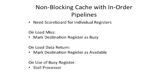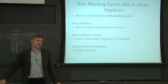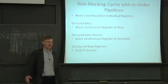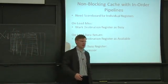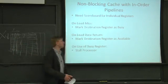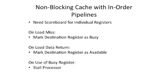For in-order machines, you can add a scoreboard bit for each individual register. When I say scoreboard here, you're not tracking where the data is coming from; instead there's a single bit saying this register is out in the memory system — if you try to access it, just stall. It's a variable-length wait so you can't say 'this will be ready in five cycles.' On a load miss, you mark the destination register as busy. When the data comes back, you mark it as available and un-stall the processor. If no one actually went to use that register while it was out in main memory, the processor never stalls and no one is the wiser.